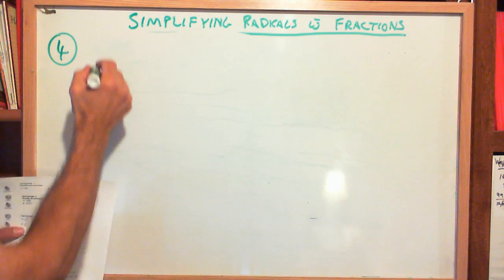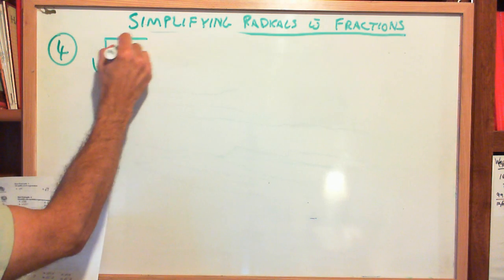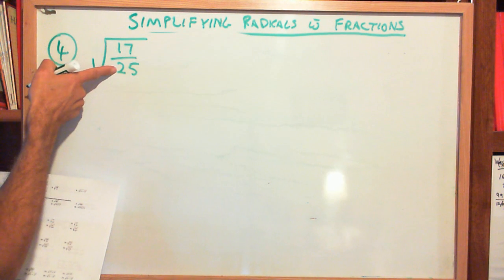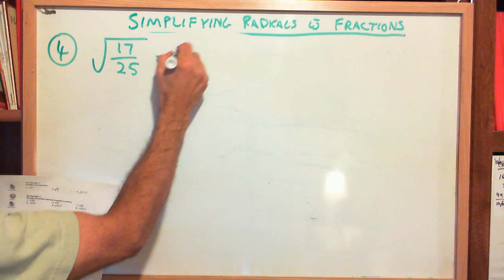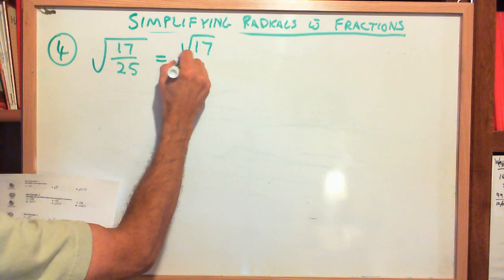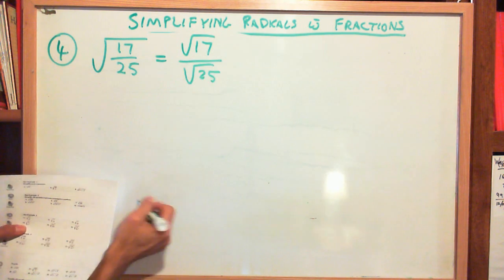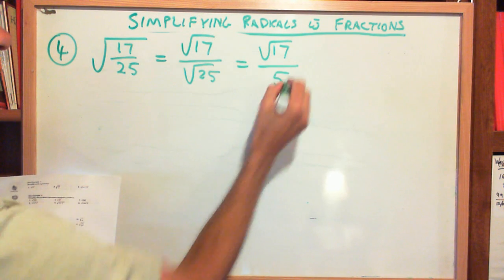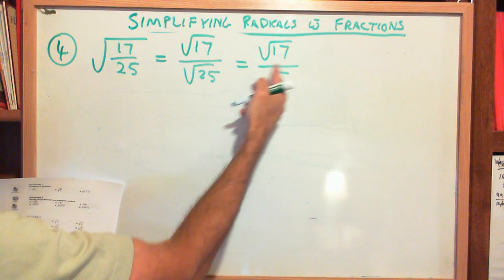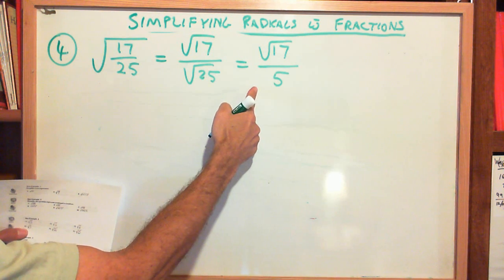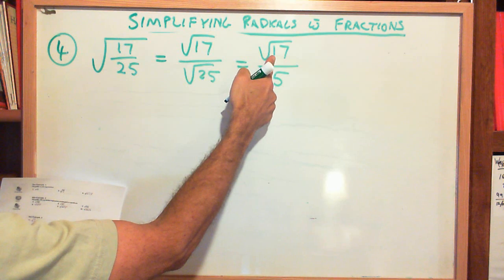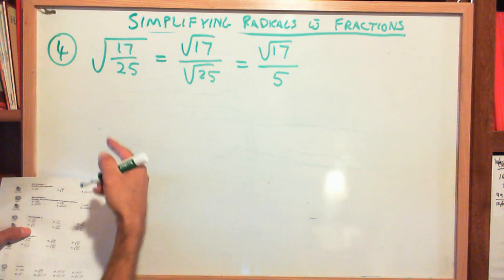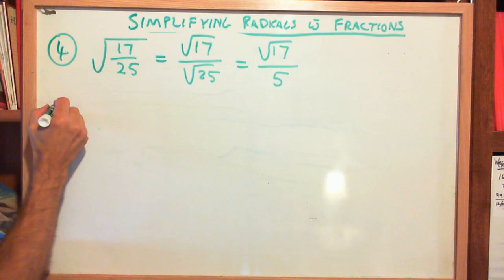Example 4: the square root of 17 over 25. Is 17 a perfect square? No. Is 25 a perfect square? Yes. So I separate them: square root of 17 over the square root of 25. The square root of 25 is 5, giving me the square root of 17 over 5. I make sure I don't have a radical in the denominator — and I don't. 17 is a prime number, so there's nothing to simplify further. We're done.